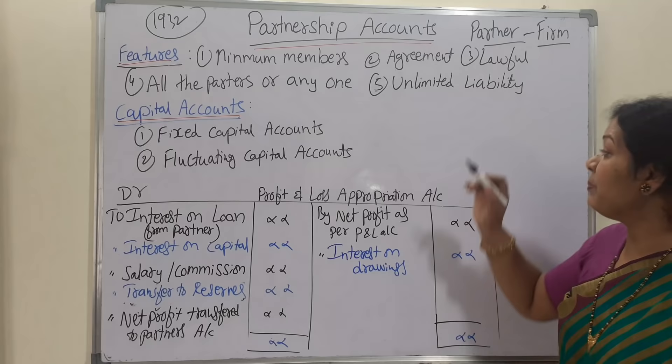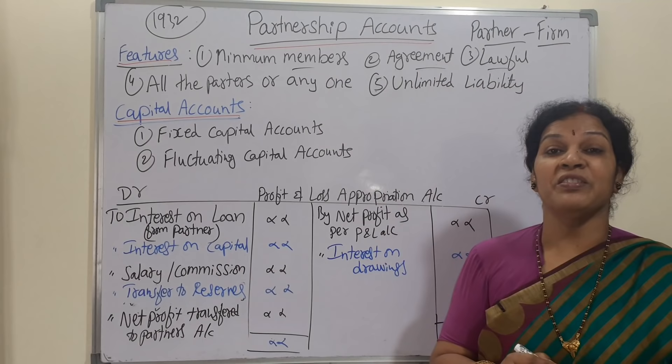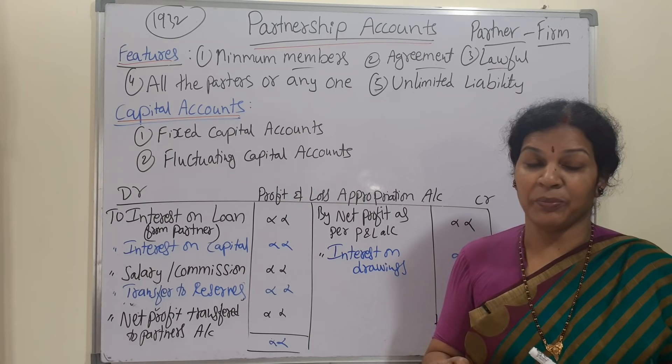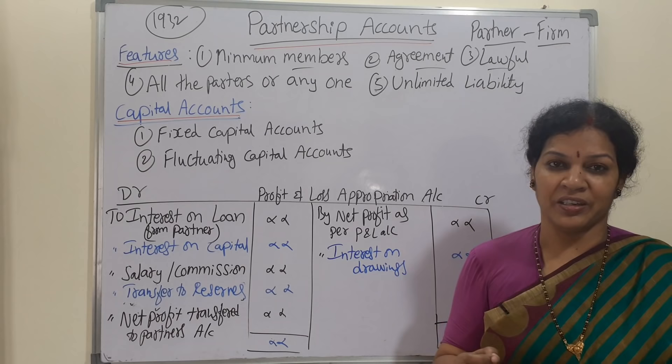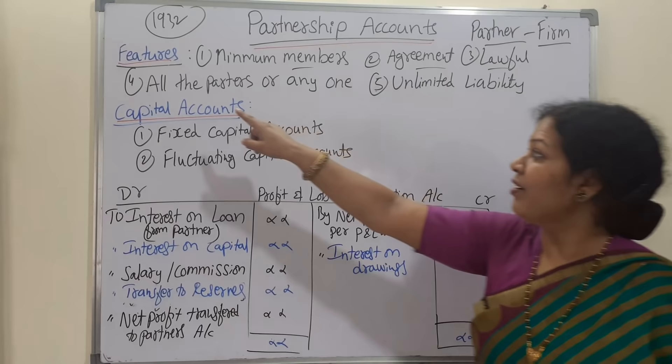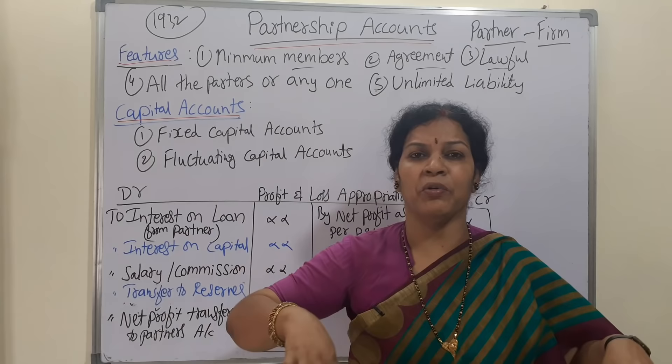The third feature is that the business must be lawful. Whatever business the partners are doing, it should be lawful. Unlawful or illegal activities are not entertained in a partnership — that would automatically become illegal and would be registered as a criminal activity.